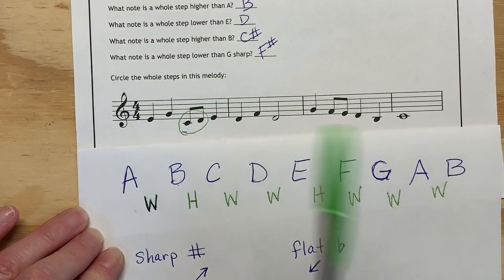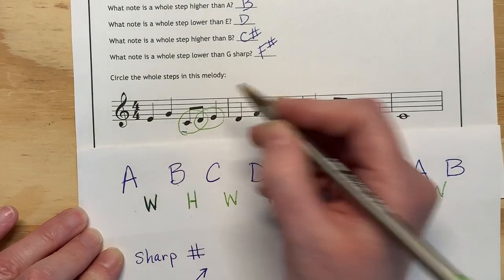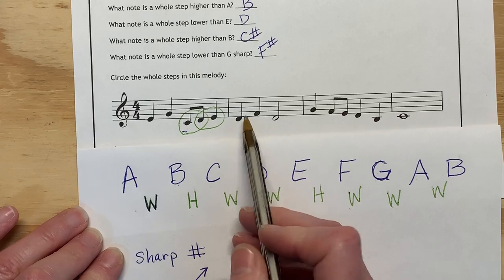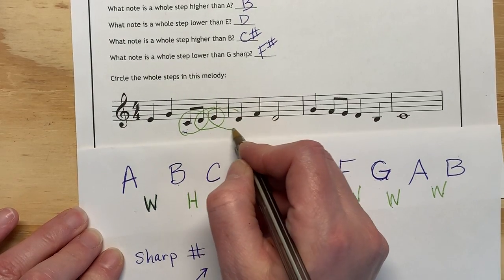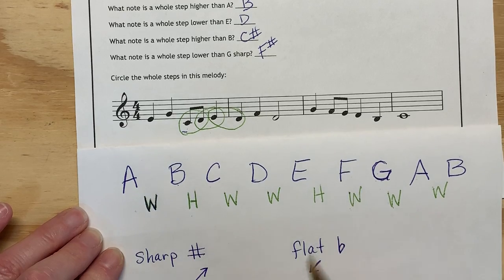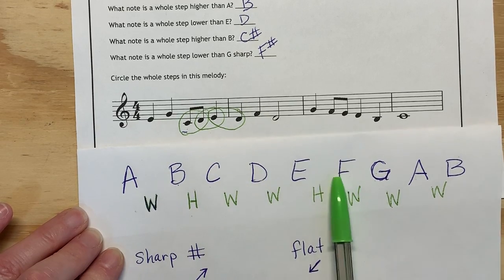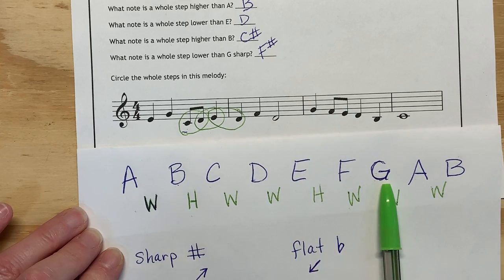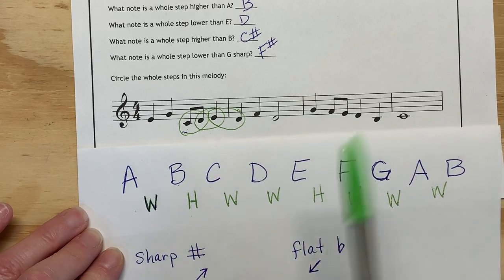A D to an E, that's a whole step. And then we're just going back down. Just because it's down doesn't mean it's not, so that's a whole step. D to an F jumps over, back down to a D, that jumps over. D up to a G, that jumps way too big. G to F, that's a whole step.